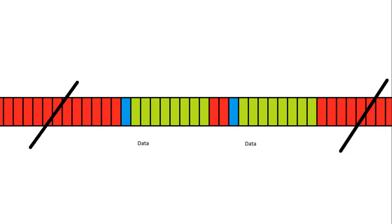Here's what it would look like graphically. Red is high, blue is low, and green is either high or low for data. Starting on the left, the line is high because it's idle, then there's a start bit, some data, a stop bit, and then high when idle again. Then another start bit, data, stop bit, and high for idle. That's one definition of the serial protocol.